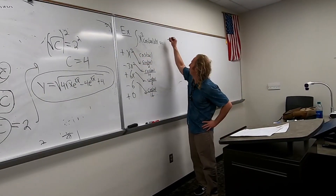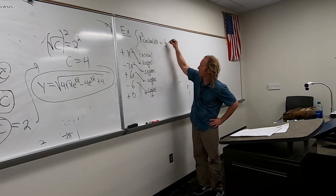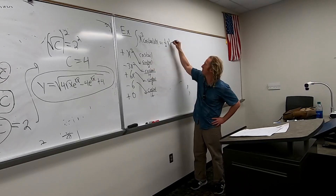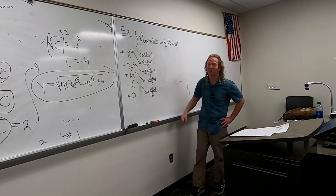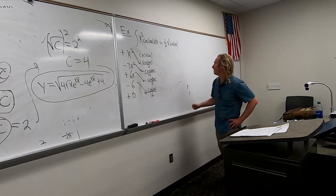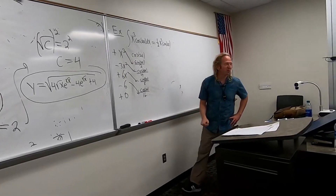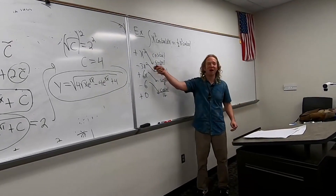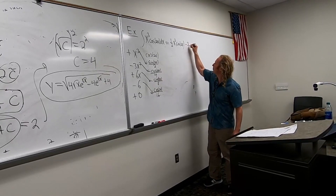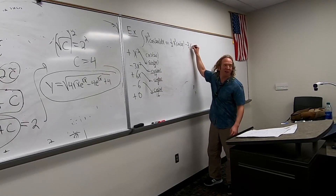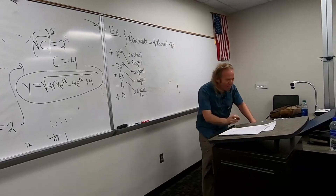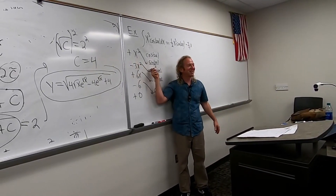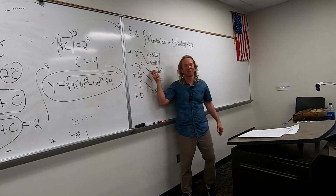So this times this will be one-half x cubed sine 2x. Then minus three-fourths — wait, it's supposed to be a plus. Because minus and minus is plus. Yes, because minus times minus is plus.